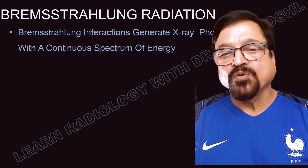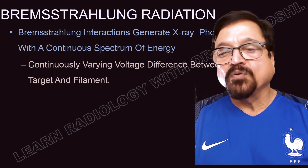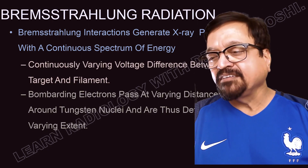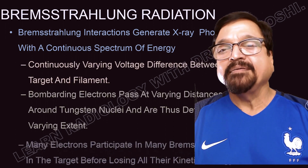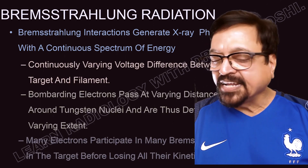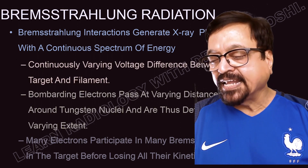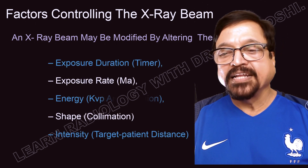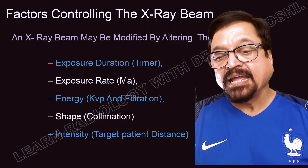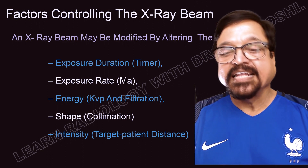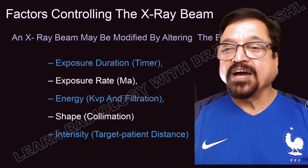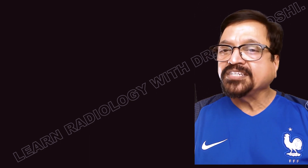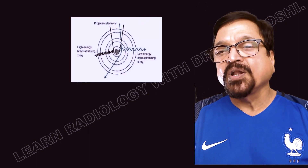Bremsstrahlung interaction generates X-ray photons with a continuous spectrum of energy, due to the continuously varying voltage difference between target and filament. Bombarding electrons pass at varying distances around the tungsten nuclei and are deflected to varying extents. Many electrons participate in many Bremsstrahlung interactions before losing their kinetic energy. Factors controlling the X-ray beam include: exposure duration (timer), exposure rate (mA), kVp (the potential difference/energy applied), the collimator (which cuts off unnecessary radiation), and the target-to-patient distance — following the inverse square law, greater distance means less radiation.